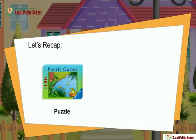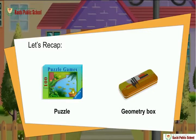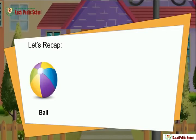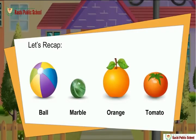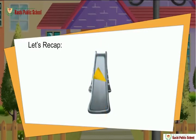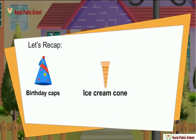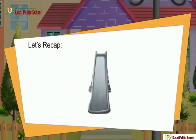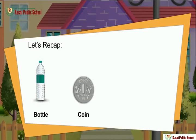A sphere only rolls because it has a curved surface — a marble, an orange, and a tomato are all spheres. A cone slides as well as rolls — a birthday cap, an ice cream cone, a traffic cone, a witch's hat, and a funnel are all cones. A cylinder also both rolls and slides — a bottle, a coin, a piece of chalk, and a pencil are all cylinders.